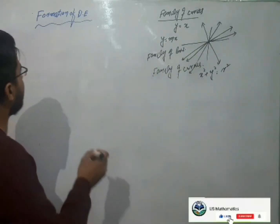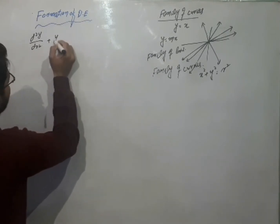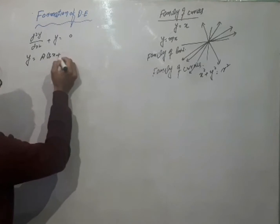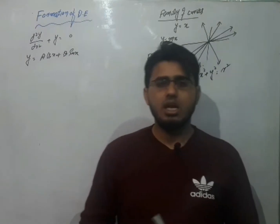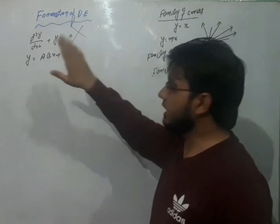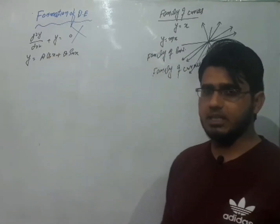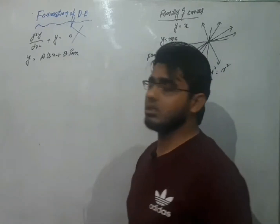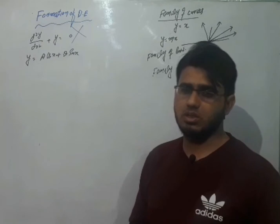हमने पिछली वीडियो में देखा था कि हमारे पास एक differential equation given थी: d²y/dx² + y = 0, और वहाँ हमने claim किया था कि y = a cos x + b sin x उस differential equation का solution है. आज हमने उल्टा काम करना है — हमें differential equation given नहीं होगी, हमें general solution given होगा. General solution ऐसे solution को कहते हैं जिसमें arbitrary constants की तदाद differential equation के order के बराबर हो.